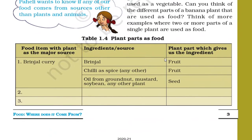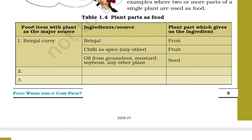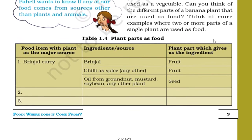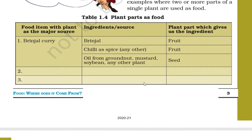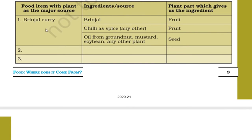Next is our table: Plant Parts as Food. The first column shows food items with plants as major sources, the second column shows ingredients or sources, and the third shows which plant part gives us the ingredient. The first dish is brinjal curry. For brinjal curry you need brinjal, chili as a spice, and oil from groundnut, mustard, or soybean. Brinjal is the fruit part of the plant. Chili is also the fruit part. Oil is obtained from groundnut, mustard, or soybean — these are seeds, so this is the seed part of the plant.